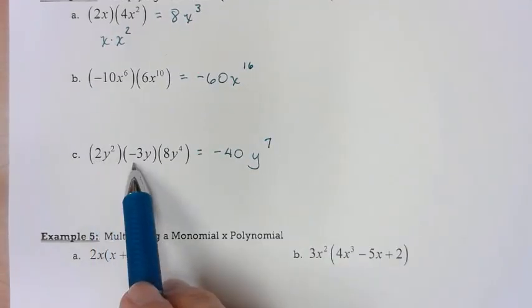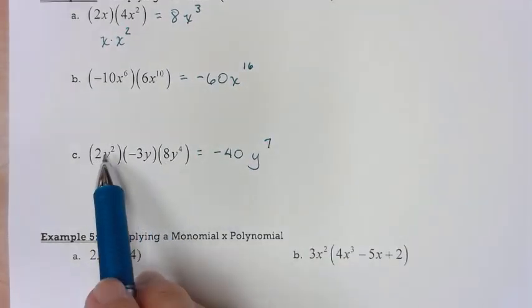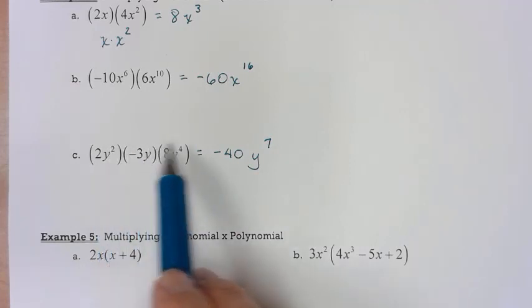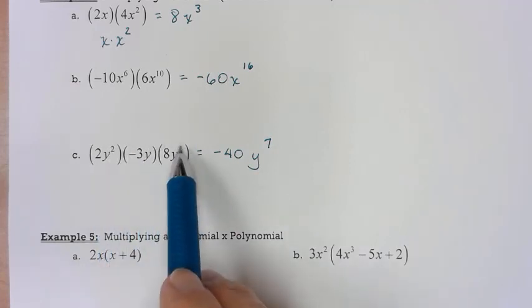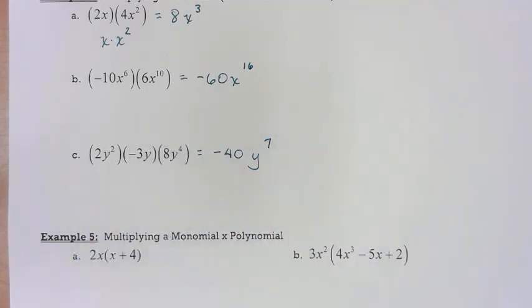So I multiplied my coefficients and added my exponents. 2 times negative 3 times 8 gives me negative 48. I've got y squared, y to the first, and y to the fourth — adding those exponents gives you y to the seventh.